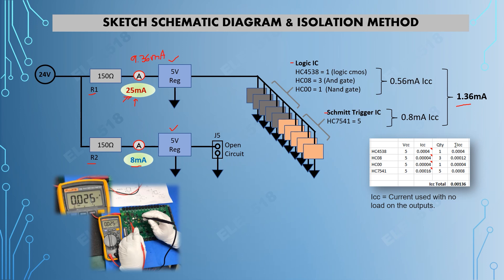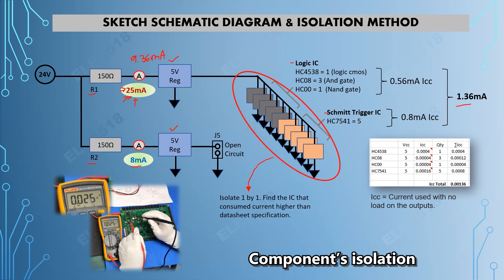But the reading goes high up to 25 milliamp. For me, 25 milliamp is too much, so my next step is to isolate these ICs one by one to find out which one consumes current higher than datasheet specification.